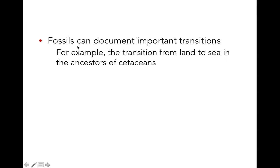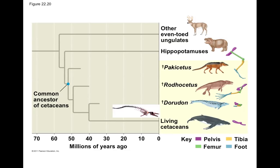Fossils can document important transitions — for example, the transition from land to sea in cetaceans: whales and dolphins. Whales and dolphins, as you hopefully know, are actually mammals and not fish, and they evolved from land-dwelling ancestors. They share ancestry with hippopotamuses, which are aquatic, and also other even-toed ungulates like deer, cattle, and goats.